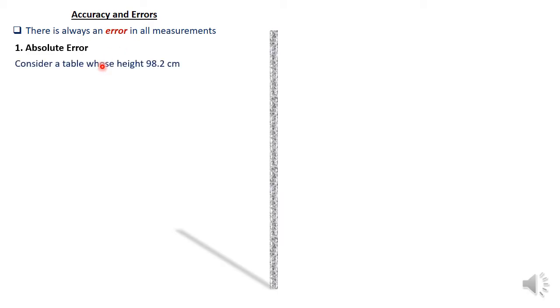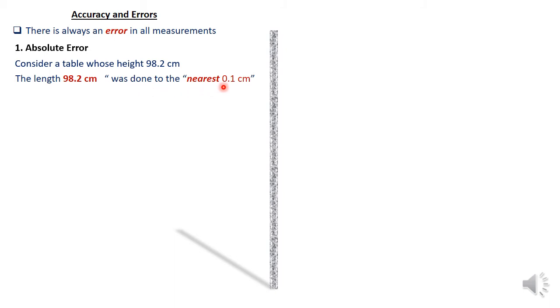The first concept is the idea of absolute error. Consider a table whose height is given as 98.2 centimeters. It means that length was measured correct to the nearest 0.1 centimeter, and therefore that is the degree of accuracy that the person was targeting.